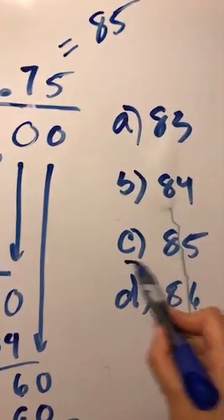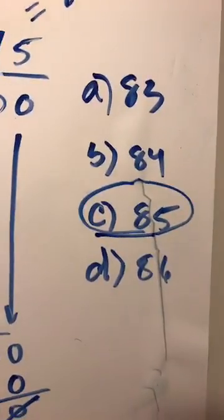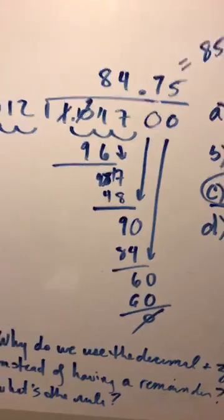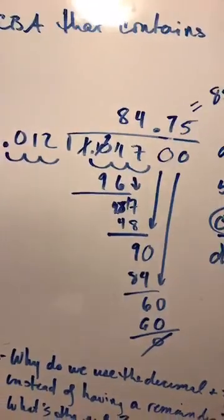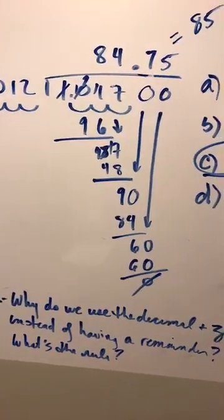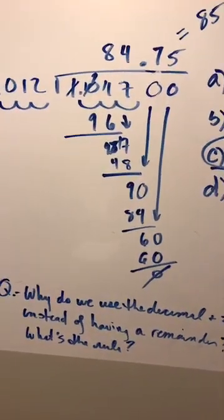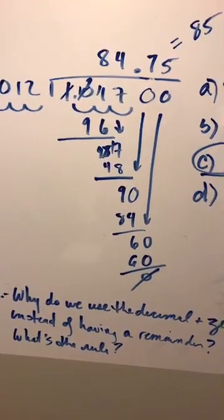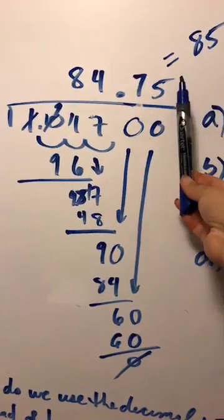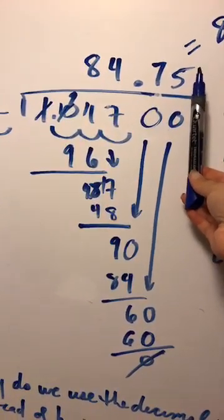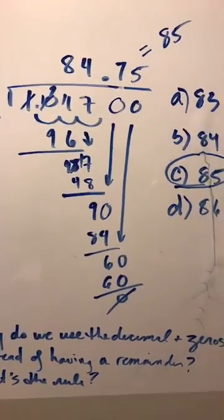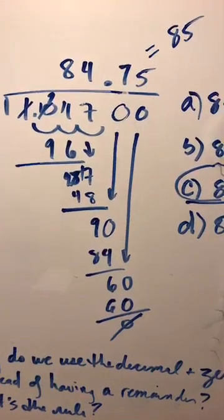Alright so just a quick recap of that question. Why do we use decimals and zeros instead of having a remainder? The answer is because we're trying to clear the remainder and the mathematical rule would be to continue to add as many zeros as you need and take it to at least the third number to the right of the decimal.